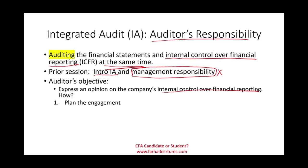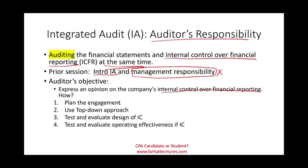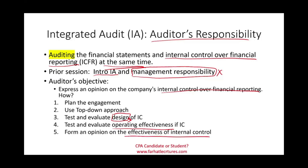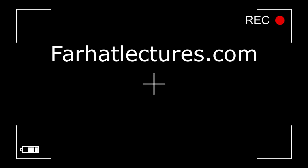The first step is to plan the integrated audit engagement. Second, they're going to use a top-down approach. Third, they are going to test and evaluate the design of internal control. Fourth, they are going to test and evaluate the operating effectiveness. Once those four steps are performed, the fifth step is to issue an opinion on the effectiveness of internal control — which is our objective. I'll cover each step in separate sessions: plan the engagement, top-down approach, test and evaluate the design, test operating effectiveness, and forming an opinion.